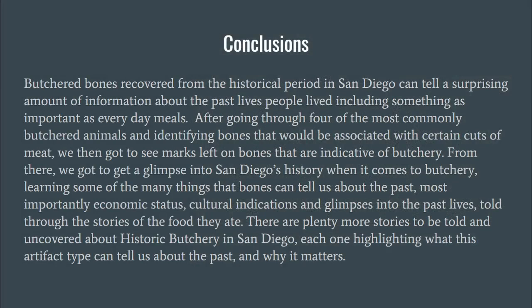In conclusion, butchered bones recovered from the historical period in San Diego can tell a surprising amount of information about the past lives people lived, including something as important as everyday meals. After going through four of the most commonly butchered animals and identifying bones associated with certain cuts of meat, we then got to see marks left on bones that are indicative of butchery. From there, we got to see a glimpse into San Diego's history when it comes to butchery, learning some of the many things that bones can tell us about the past — most importantly, economic status, cultural indications, and glimpses into the past lives told through the stories of the food they ate. There are plenty more stories to be told and uncovered about historic butchery in San Diego, each one highlighting what this artifact type can tell us about the past and why it matters.